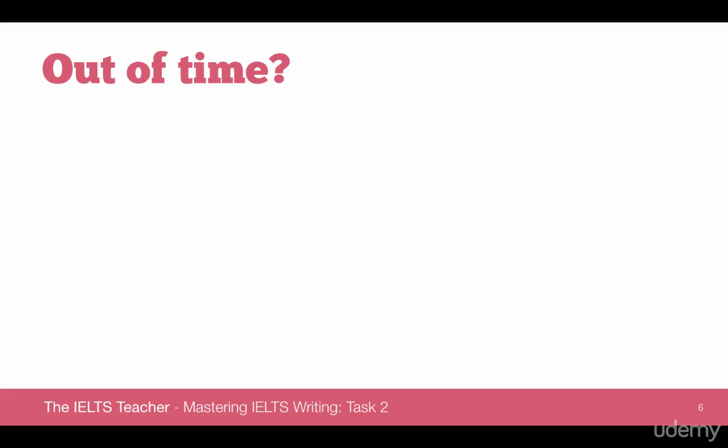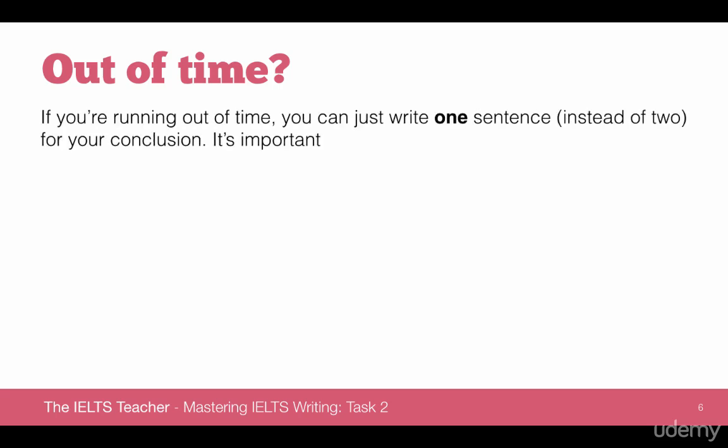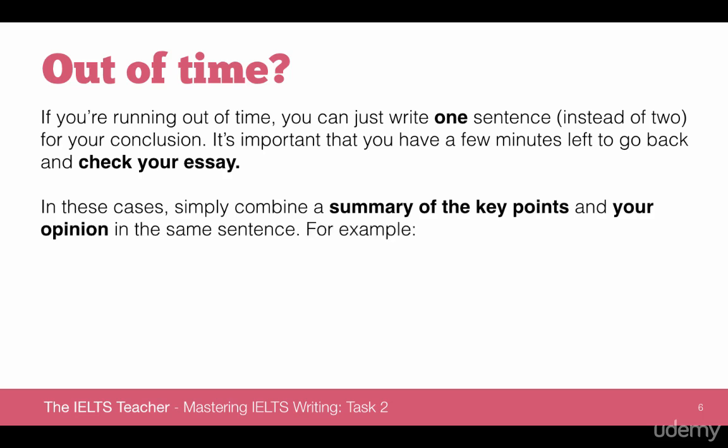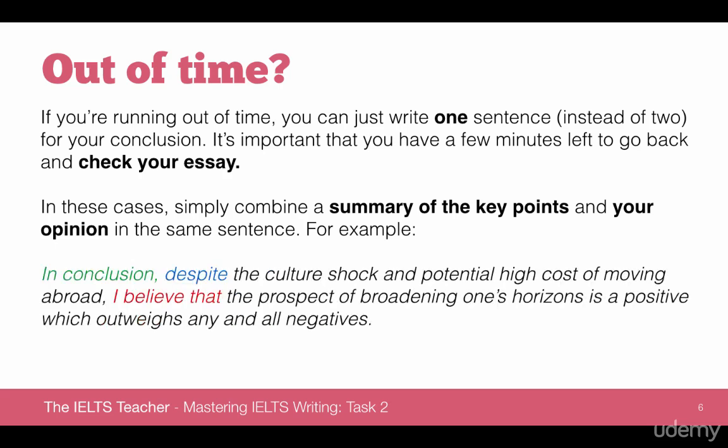Now if you're out of time — a very common occurrence because of the amount of time some people spend on the introduction and body — you may struggle to write two sentences. If that's the case you can just write one sentence, and there is an advantage to this as well: it improves the complexity of your sentence and saves you time. It's extremely important that you have at least a couple of minutes to go back and check your essay — ideally five minutes. What we need to do is simply combine the summary of the key points with your opinion. Here's an example: in conclusion, despite the culture shock and potential high cost of moving abroad, I believe that the prospect of broadening one's horizons is a positive which outweighs any and all negatives.